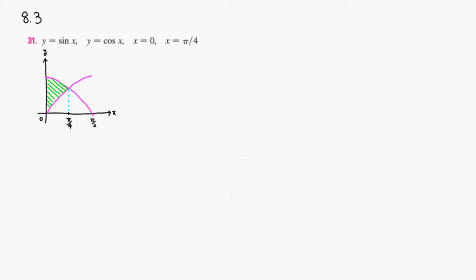I'm going to assume that the density rho is going to be 1. So the centroid is exactly the same as the center of mass, and also the total mass is really the same thing as the area. So first we need to find the area.